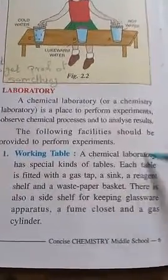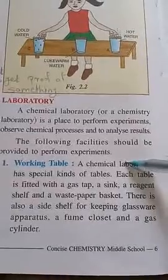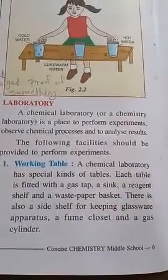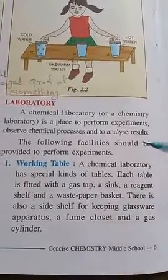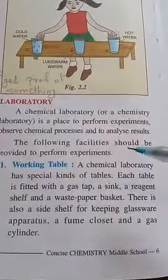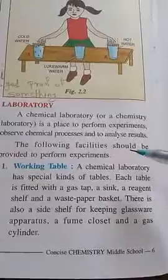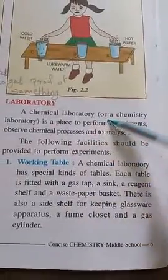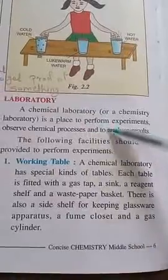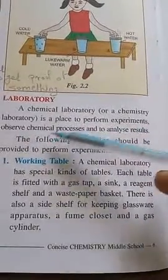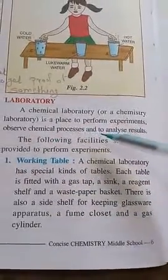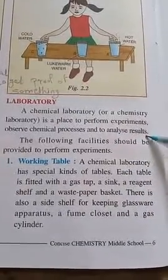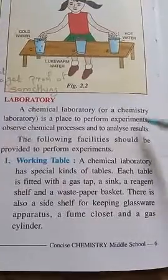For doing experiments, a laboratory is essential. Simple experiments we can do at home, but in chemistry the experiments are performed in a chemical lab. A chemical laboratory is a place to perform experiments, observe chemical processes, and to analyze results.